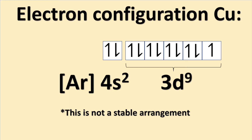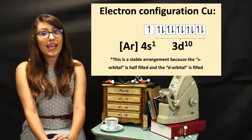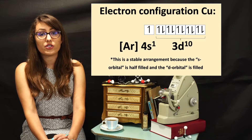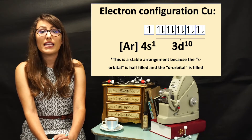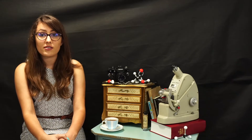Another case where we see an exception to the rule is with copper, where if you were to follow the Aufbau principle, it would be argon-4s2-3d9. However, a more stable arrangement would be to promote an electron to have a fully-filled d orbital and a half-filled s orbital, thus making an electron configuration of argon-4s1-3d10. It is important to note that this trend is noted for elements in the same group as chromium and copper.